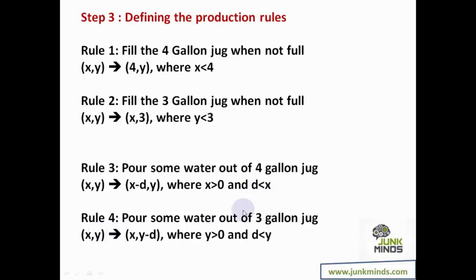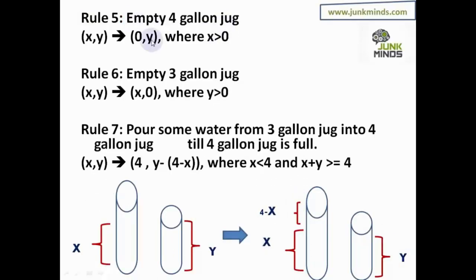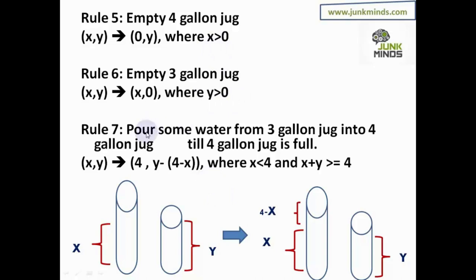Rule 5: empty the four gallon jug — the four gallon becomes zero, the three gallon remains the same. This requires x greater than zero. Rule 6: empty the three gallon jug — the four gallon remains the same, the three gallon becomes zero. This requires y greater than zero.